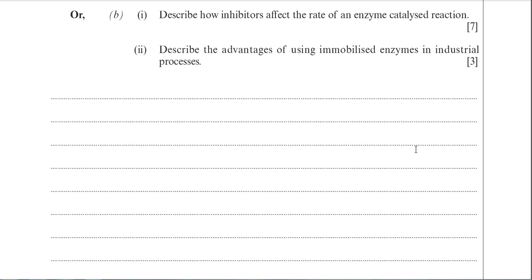There are two types of inhibitors: the competitive inhibitor and the non-competitive inhibitor. Relative to the question, both inhibitors actually reduce the rate of an enzyme-catalyzed reaction. That's a bold statement you can make in your answer to get a mark.